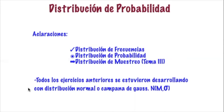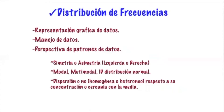Todos los ejercicios anteriores se desarrollaron con una distribución normal o campana de Gauss. Una distribución normal se caracteriza por una fórmula determinada por una media mu y una desviación estándar sigma. La distribución de frecuencias nos ayuda con las representaciones gráficas de datos: cómo están los datos, cómo se representan, cómo se manejan y cómo los podemos agrupar para resaltar los patrones de los datos.